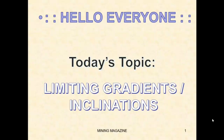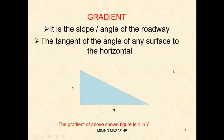Hello everyone. Today's topic is limiting gradients and inclinations. First, what is a gradient? It is the slope or angle of the roadway. Another name for roadway gradient is cross slope. Gradient is defined as the tangent of the angle of any surface to the horizontal.